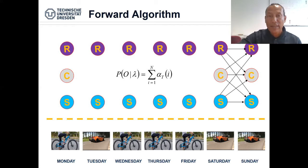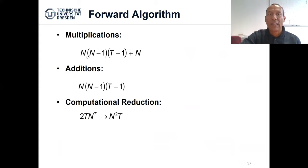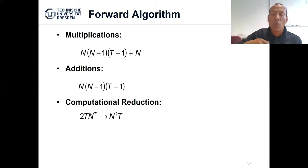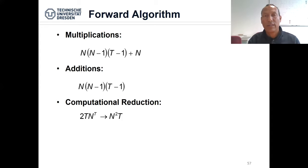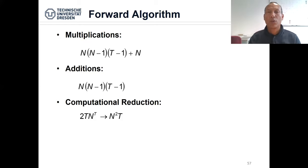Now we reduce this giant number to N²·T. By so doing we can calculate the likelihood of observing the sequence of observations in different models. And the one which has the biggest likelihood number — we assume that is where the observations were produced.